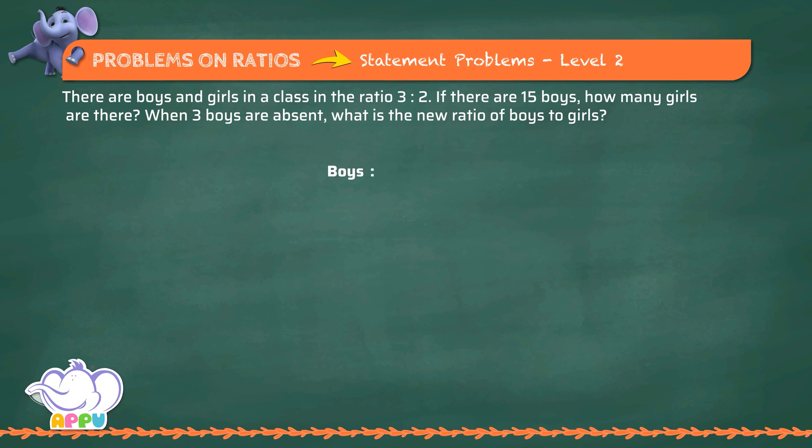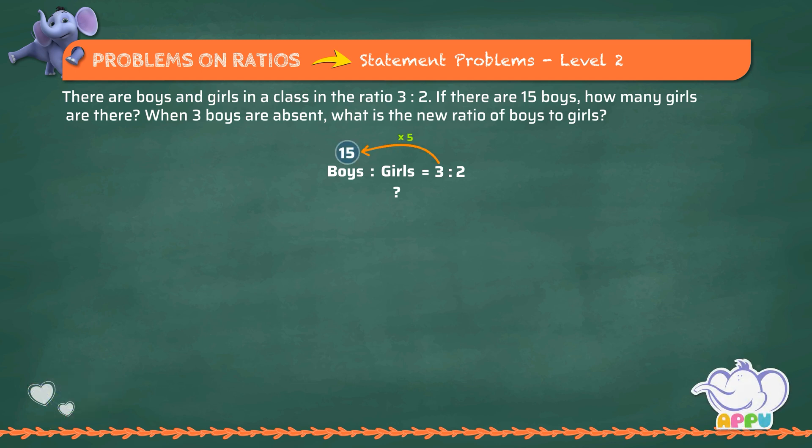Ratio of boys to girls equals 3 is to 2. Number of boys equals 15. Let's find the number of girls. To find the number of boys, we multiply 3 with 5. So, to get the number of girls, we multiply 2 by the same number, 5. 2 times 5, that is 10. There are 10 girls.